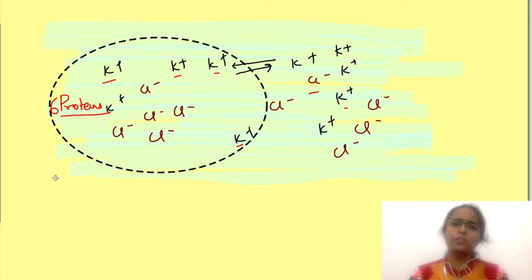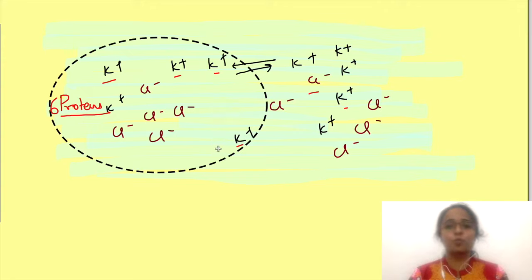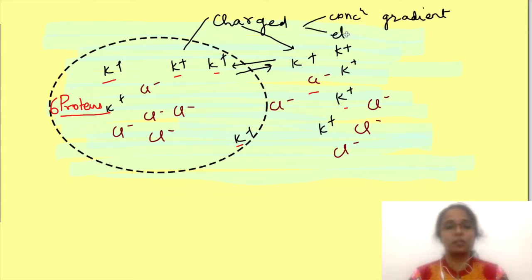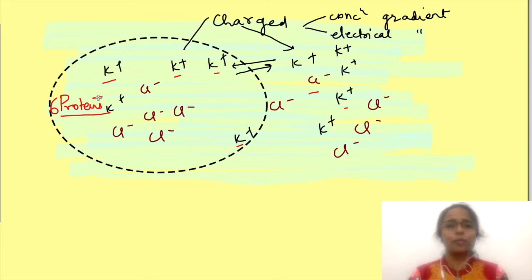We are adding proteins inside the cell because it is the cell which will start producing them. So say I am adding 6 proteins. Now what will happen is that the other ions, to which the cell membrane is permeable, will redistribute across the membrane. Why will they redistribute? After all their concentration is the same on both sides. But for a charged substance there are two forces governing its movement: one is its concentration gradient and the other is its electrical gradient. Since proteins are negatively charged, even though there is no concentration gradient for the ions, the net charge on one side has changed, so there is development of an electrical gradient.